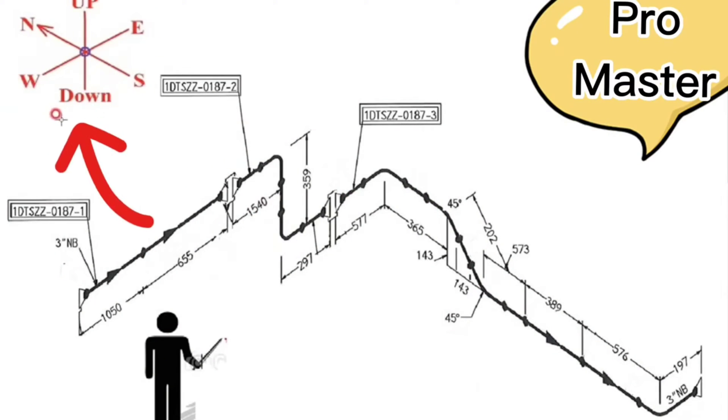Every pipe drawing has such a sketch, this indicates the directions. There are six directions here.